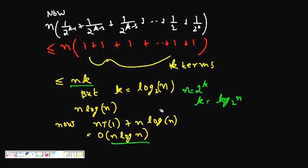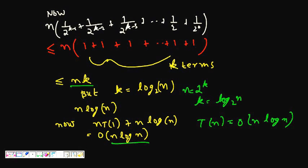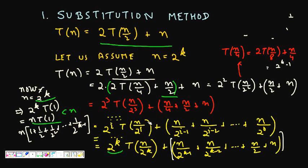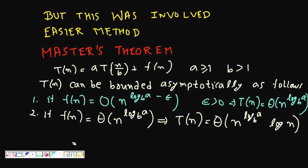So T(N) is O(N log N). But that was quite involved — we did a lot of mathematics to solve a simple equation. If equations get more difficult, substitution becomes impractical. Fortunately, there are shortcuts called Master's Theorem.